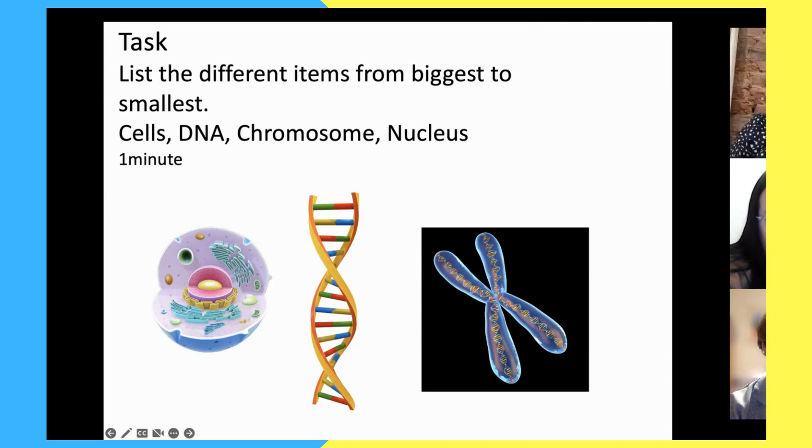Here we've got our DNA molecule and here we've got a chromosome. So just one minute, I want you to, if you're watching this as a recording, just pause and I'd like you to think about which is the biggest to the smallest: cells, DNA, chromosomes, and nucleus. Just make a little list of them and I'm going to hit the timer now.